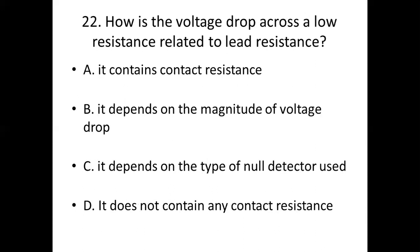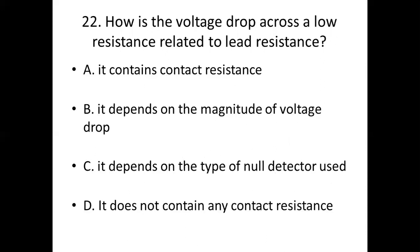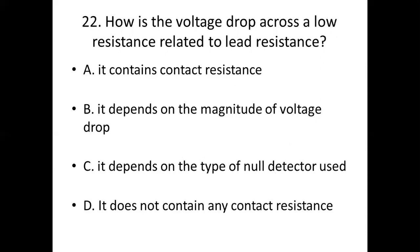22nd bit. How is the voltage drop across a low resistance related to lead resistance? Option A: it contains contact resistance. Option B: it depends on the magnitude of voltage drop. Option C: it depends on the type of null detector used. Option D: it does not contain any contact resistance. Answer: Option D, it does not contain any contact resistance.